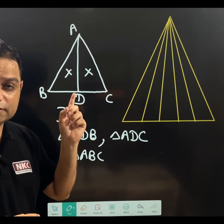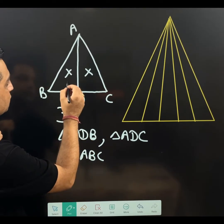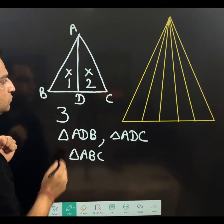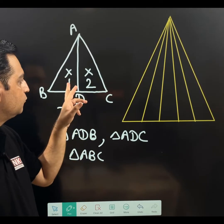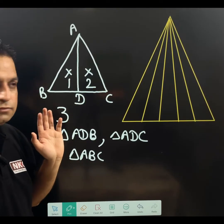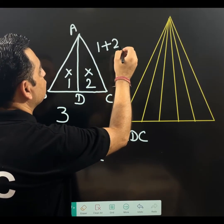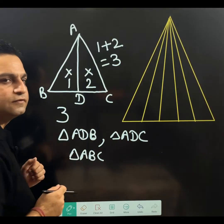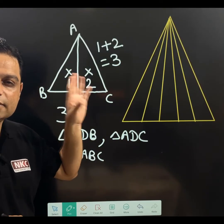And there is a shortcut to remember this also. What is the shortcut? Write 1 and 2. I have written 1, then 2. Then what we need to do, just add both of them. You will get the answer that three triangles are there in total.